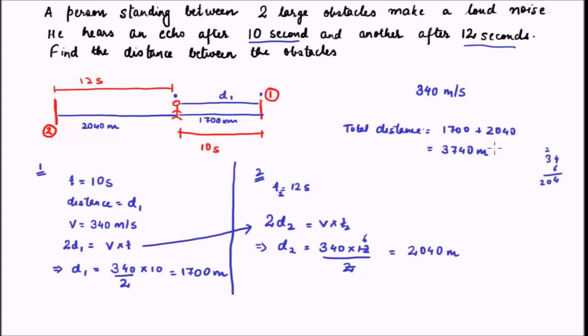Using the concept of echo we can find the distance between objects if we know the velocity, or alternatively we can find the velocity of sound if we know the distance. I hope these two examples give you insight about how to approach numericals. I suggest you try a couple of numericals on your own. With this I conclude today's lecture. The next lecture will study what is known as free, damped, and forced vibrations, and if possible we will touch upon the concept of resonance. Till then, have a great day.